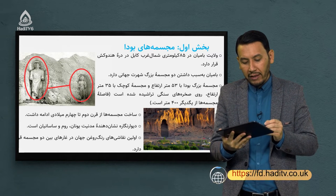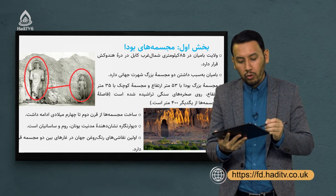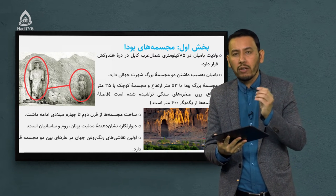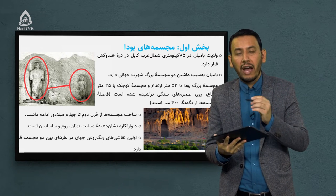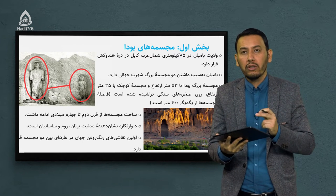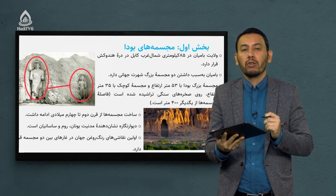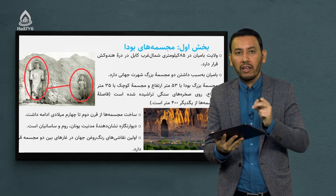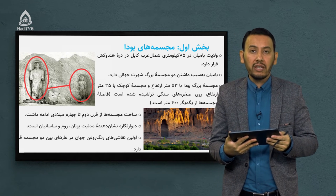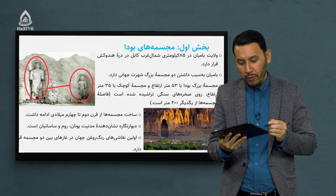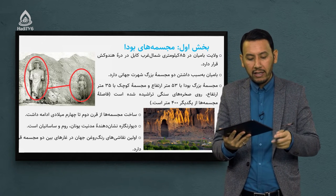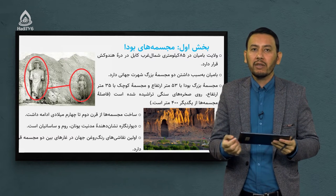این یکی از نشانه‌های شگفتی است که چگونه انسان‌های آن دوران توانستند چنین مجسمه‌هایی با این عظمت و بزرگی بسازند. دیوارنگاره‌ها نشان‌دهنده مدنیت یونان، روم و ساسانیان است. وقتی نگاه می‌کنیم، تمام نقوشی که بر روی مجسمه‌ها یا تندیس‌های اطراف قرار دارد نشان می‌دهد که تمدن یونان، روم و ساسانیان در دوره‌های مختلف در ولایت بامیان حکومت می‌کردند.